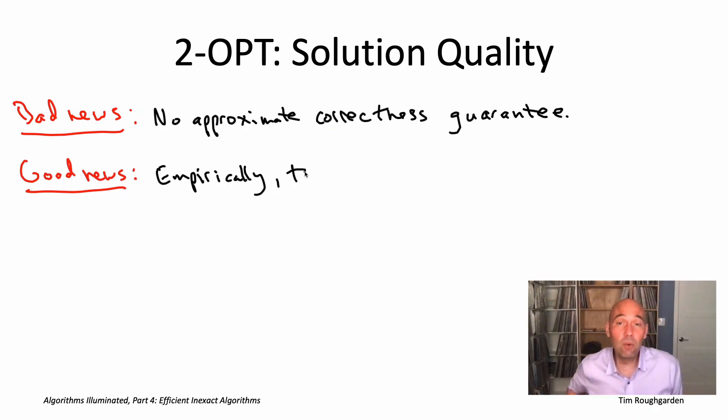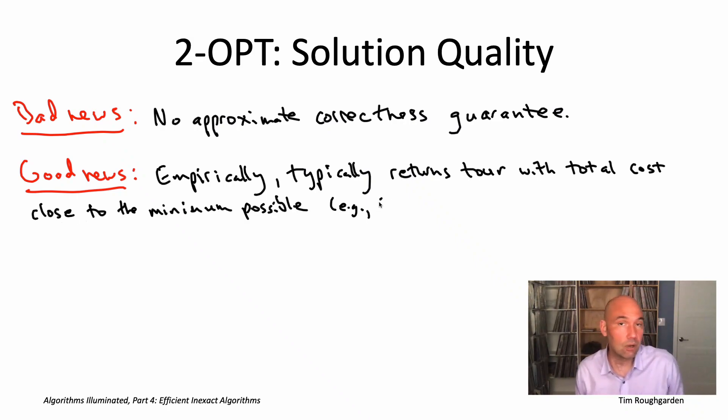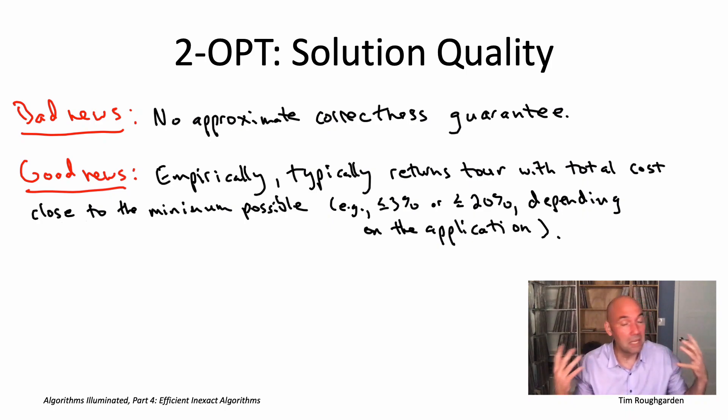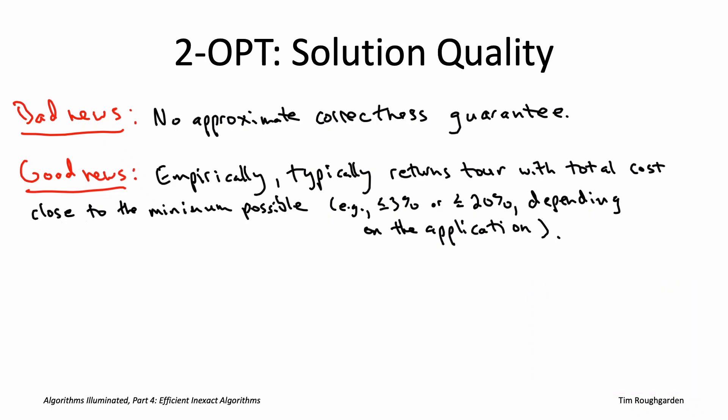So the good news is that, once again, empirically, the performance of the two-opt heuristic algorithm is pretty impressive. Its performance depends a little bit on the application and the types of instances that you're dealing with, but it's very common that it will return tours that are within, say, 10% to 20% of the minimum cost tour. And in many applications, it actually gets within a few percent quite reliably. So that's very encouraging. Obviously, it would be nice if we had one of these insurance policies like we had for our greedy heuristic algorithms, but at least empirically, on the types of instances that show up in real-world applications, the two-opt heuristic reliably does quite well, outputs tours with total cost not much more than the minimum possible.